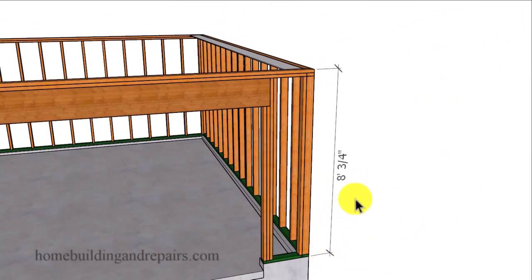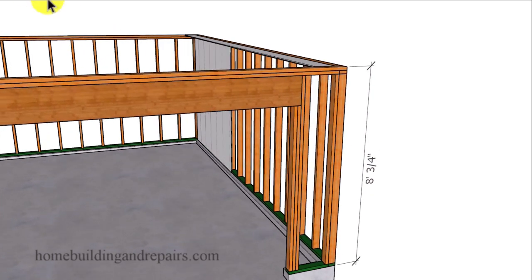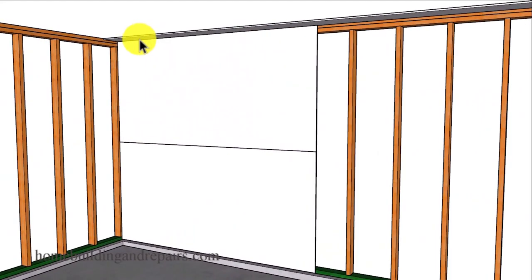So again, the overall wall framing height is going to be around 8 foot and 3 quarter inches, and we've just subtracted a half inch from that overall distance.